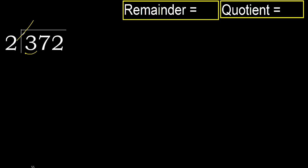2 multiplied by 2 is 4, 4 is greater. 2 multiplied by 1 is 2, 2 is not greater. Ok, subtract.